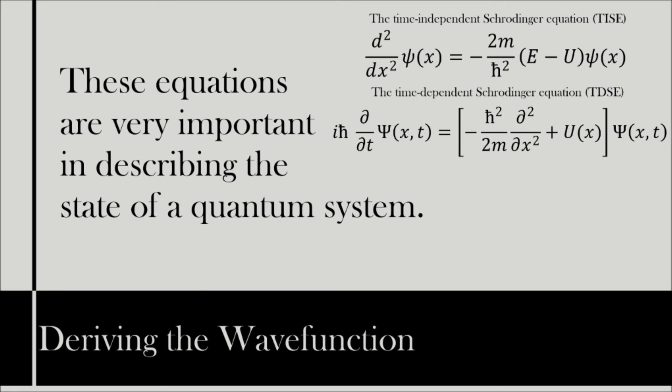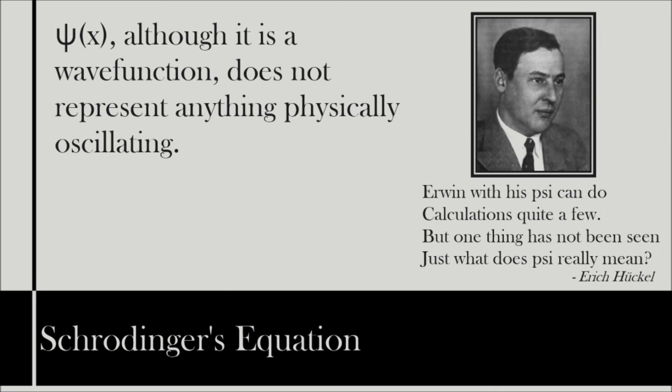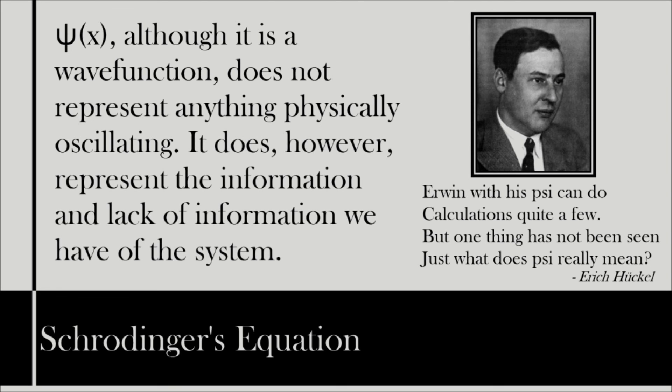So does the wave function, ψ(x), actually represent anything oscillating? Oddly, no it doesn't. What it represents is the most complete description that can be given to a physical system. It contains all the information on the system, information that can be released via the right mathematical manipulation.